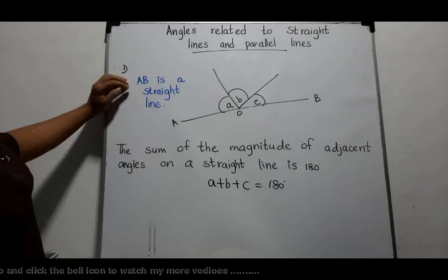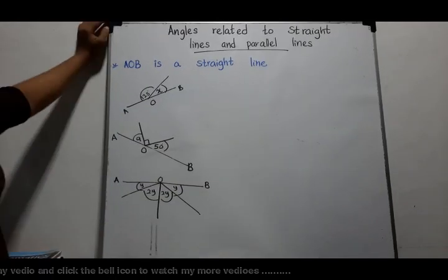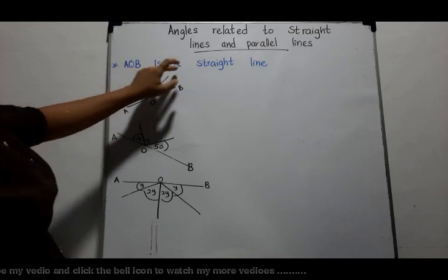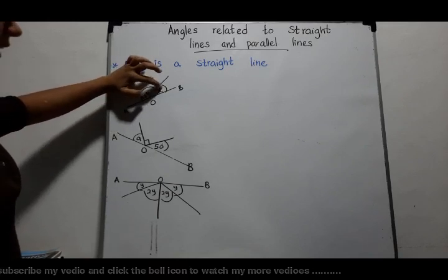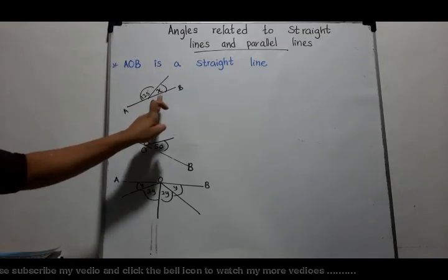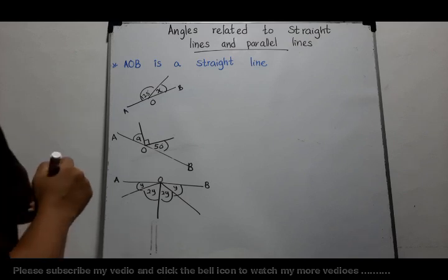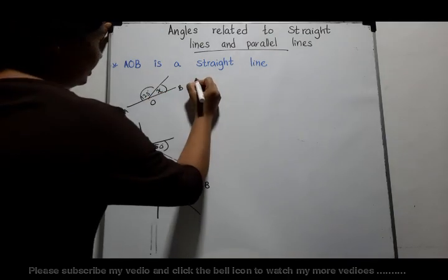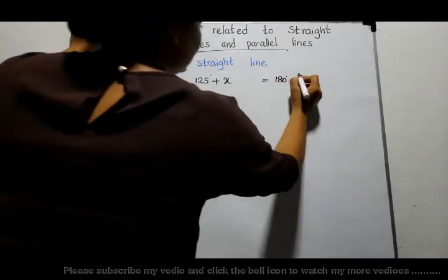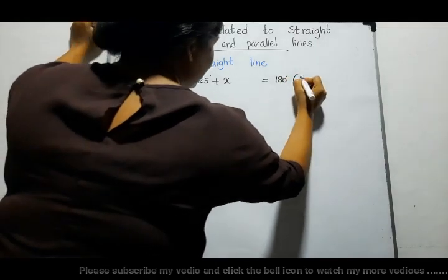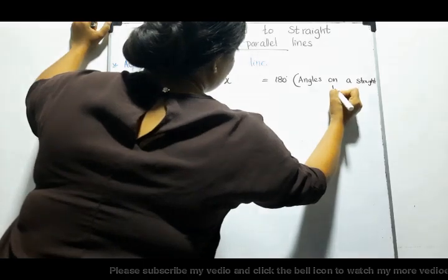Now, we have to discuss some questions related to this part. Let's see these three examples. Here, you are given AOB is a straight line. The magnitude of one angle is 125 degrees and you are not given the magnitude of angle X. You have to find angle X.